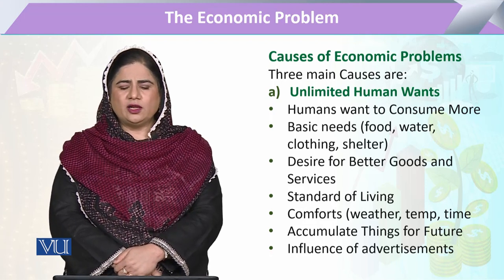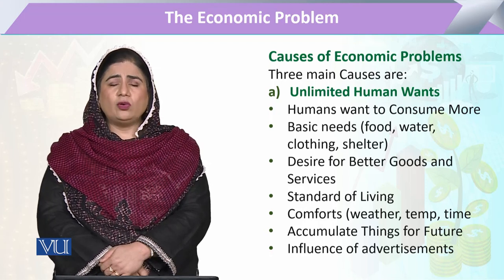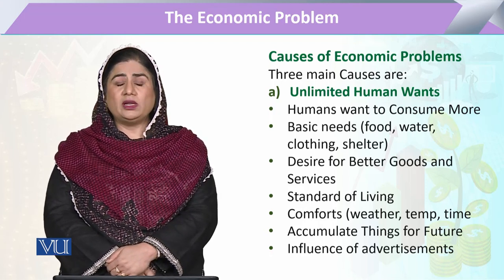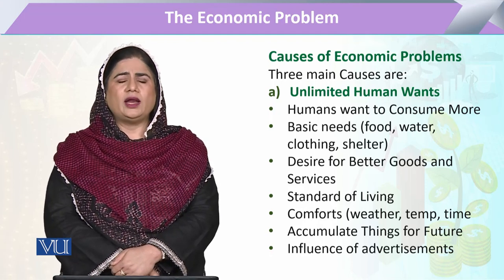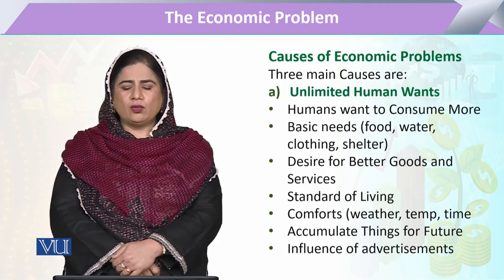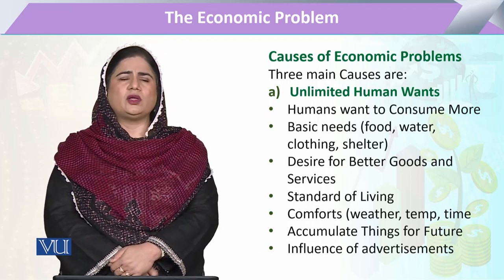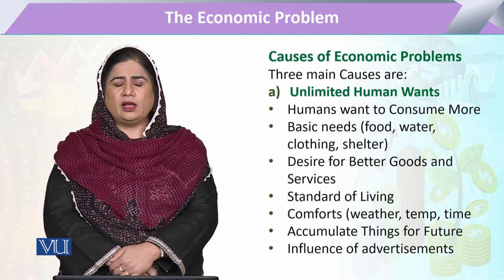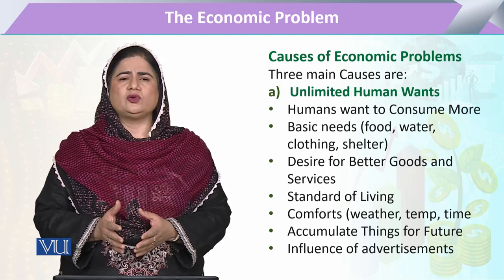The first cause is that human wants are unlimited. Humans want to consume more and more, and they not only want to consume more, rather they want to own more. They want to have more food, more water, more land, clothing, and shelter. This gives the concept related to quantity.